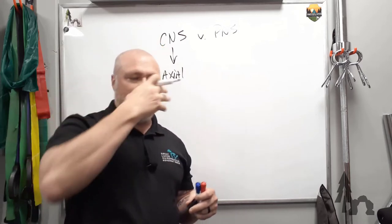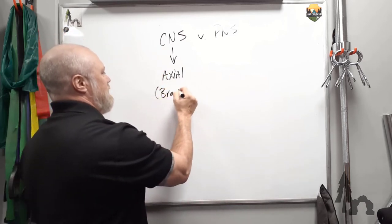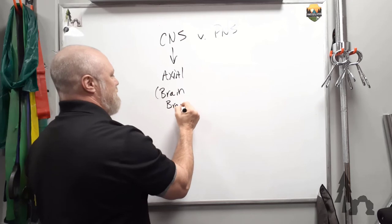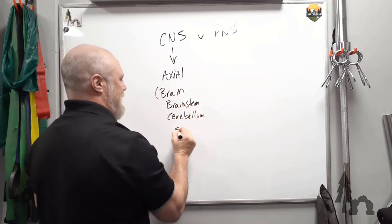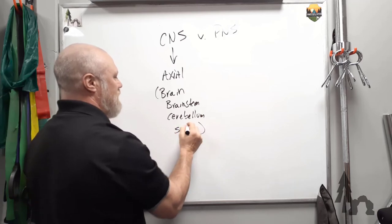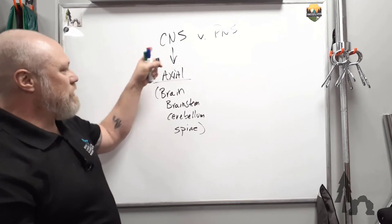It doesn't necessarily involve your ribs, but your skull and your vertebral column. So this will basically be your brain, your brain stem, your cerebellum, and your spine.